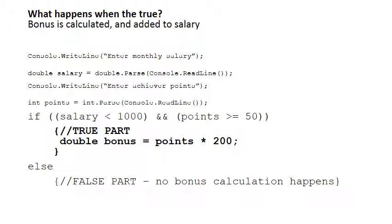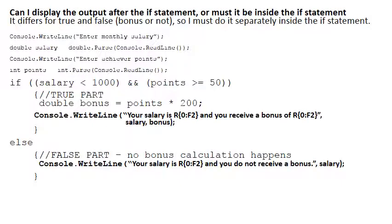When the condition is true, the bonus needs to be calculated. How do we calculate it? It's points times 200 — remember the employee earns 200 Rand per achiever point. The last question has to do with the output, and we've commented on that earlier: the two structures of the outputs differ.